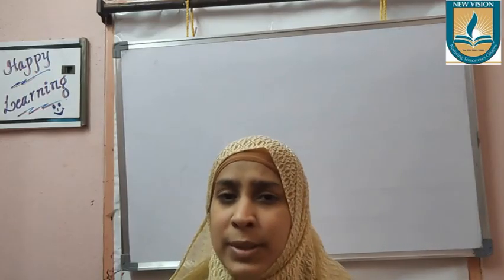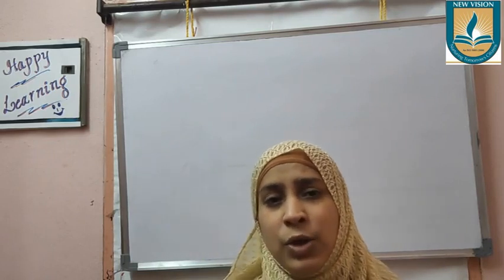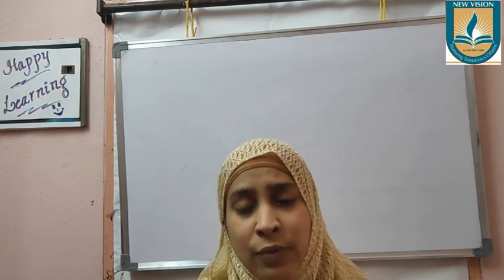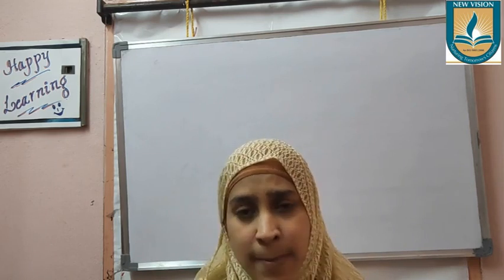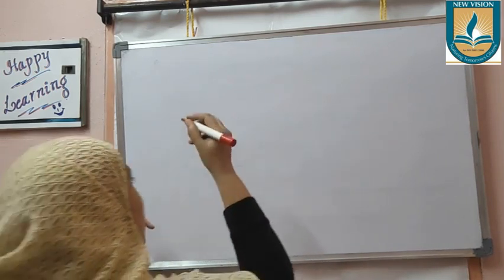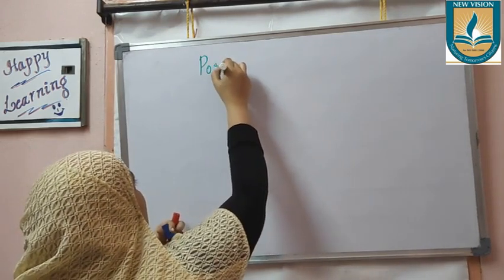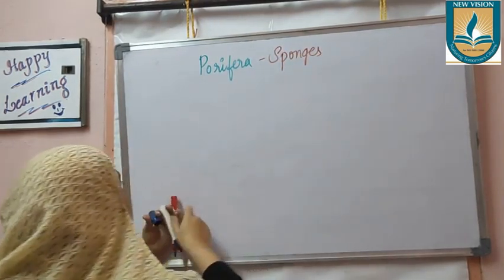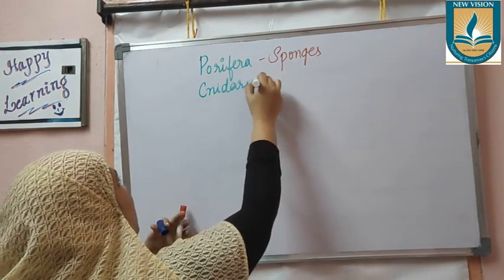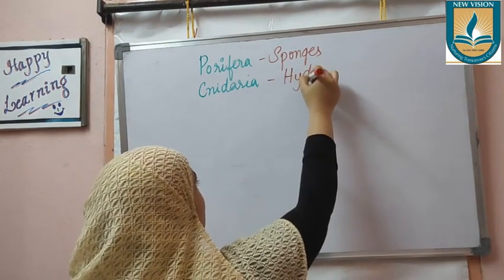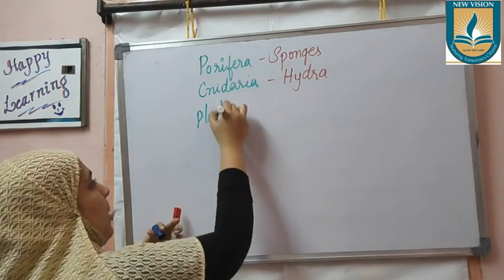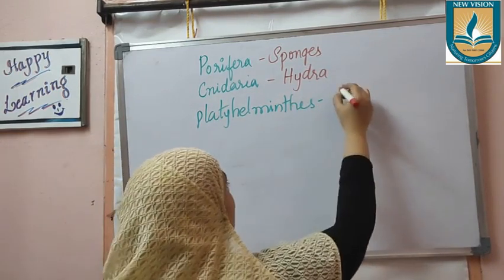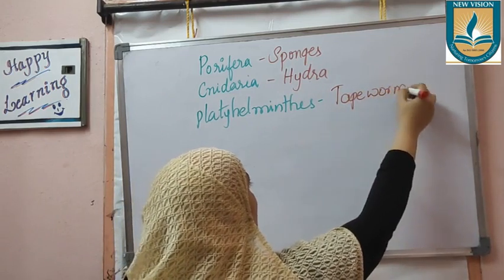Now we will start about invertebrates. Before starting about the invertebrate circulatory system, whenever we study the organ systems of invertebrates, we go in a sequence of their phylum, as we studied in 9th class classification. First we studied about Porifera, where we studied about sponges. Second phylum is Cnidaria, where we study the organ systems of Hydra. Next comes Platyhelminthes, where we study about tapeworm or Planaria.